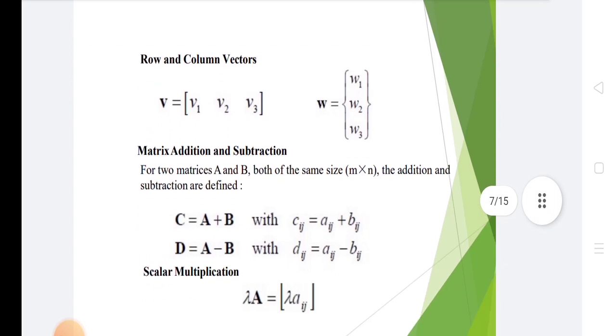In row and column vectors, V equals V1, V2, V3. W equals W1, W2, W3. In matrix addition and subtraction, for two matrices A and B both of the same size m into n, the addition and subtraction are defined: C equals A plus B, D equals A minus B. Lambda A equals lambda AIG.